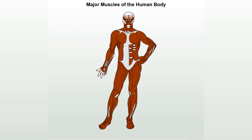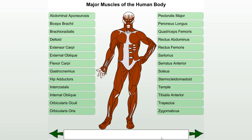Major muscles of the human body. Follow along as we roll the cursor over each muscle name to see its corresponding location on the body. Read the white box at the bottom of the screen for any additional information about the muscle.